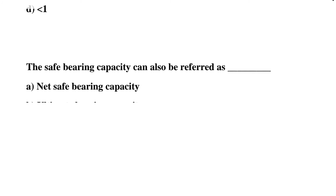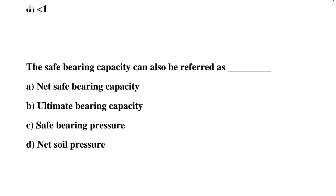Next question: the safe bearing capacity can also be referred to as — Option A: net safe bearing capacity, Option B: ultimate bearing capacity, Option C: safe bearing pressure, Option D: net soil pressure. The correct answer is Option B, ultimate bearing capacity.